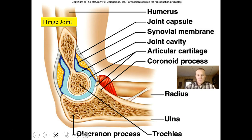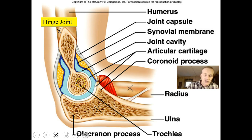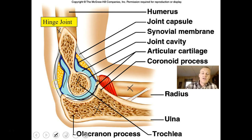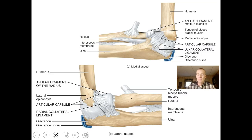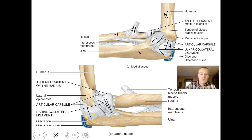The elbow joint is one I definitely want you to know — I'd like you to be able to draw it. You have three articulating bones: the ulna, the radius, and the humerus coming together. The head of the humerus comes down with articular cartilage, synovial membrane, articular cartilage on the other side, and the joint capsule covers the whole thing. There are ligaments coming down connecting bone to bone. Look at all the ligaments connecting those bones — each white cord is a different ligament in a different dimension.